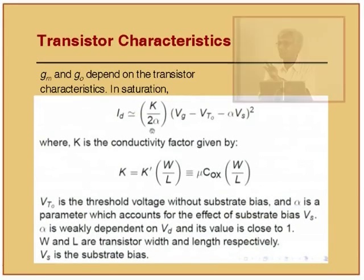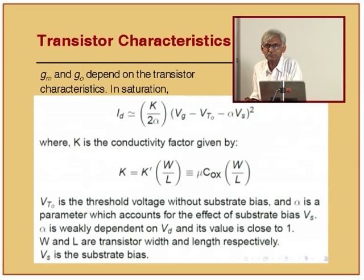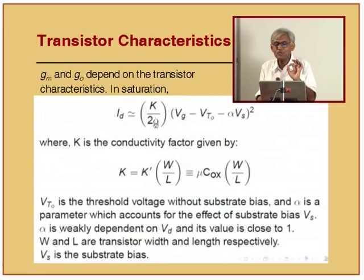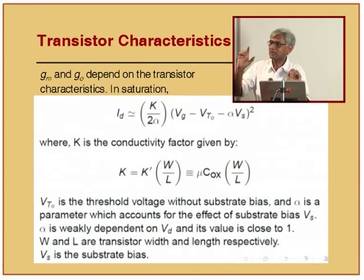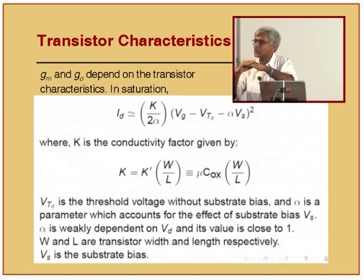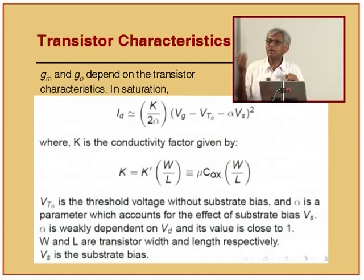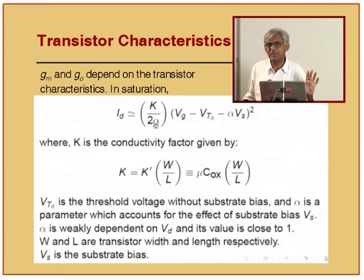Now let us make it specific to a transistor. Suppose that device is actually a single transistor. This is a somewhat more advanced equation, so just assume alpha equal to 1. Alpha takes care of a second order effect: the turn-on voltage of transistors is not necessarily constant and depends on the source voltage. Currently, to keep things simple, assume alpha equals 1 throughout.